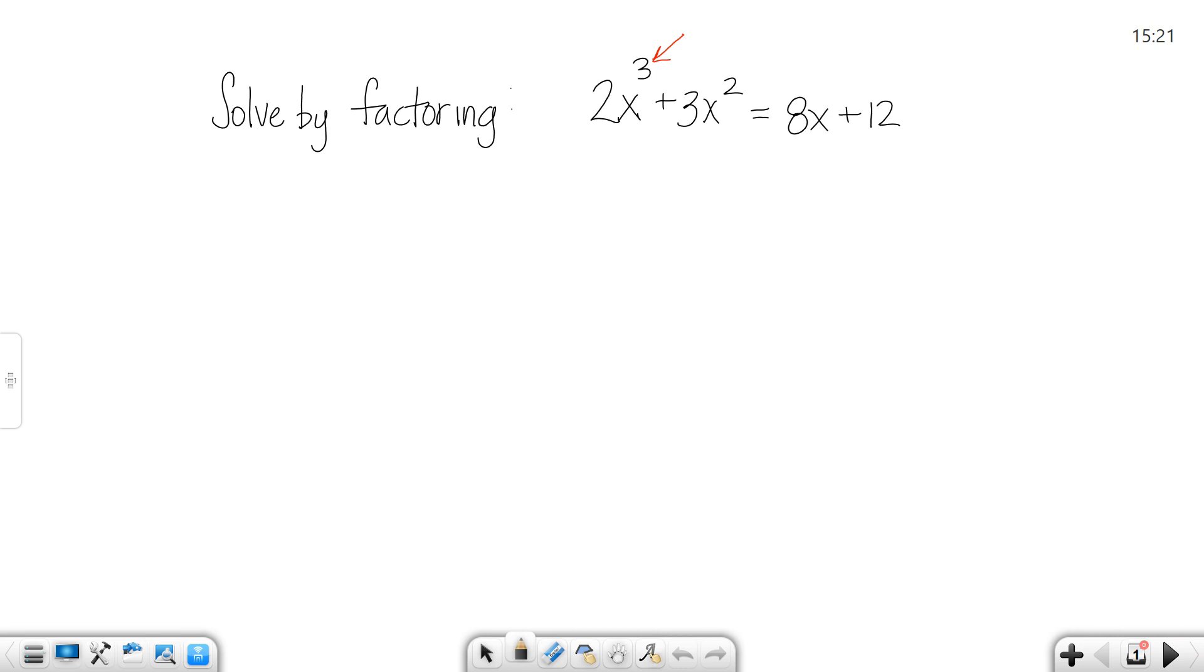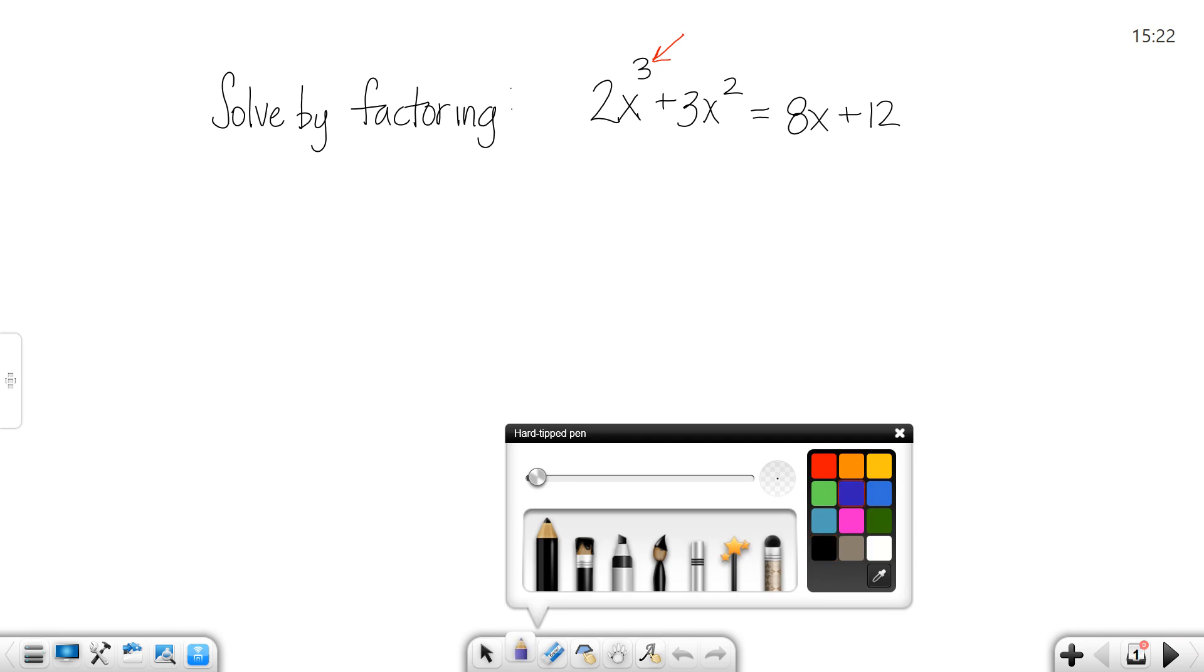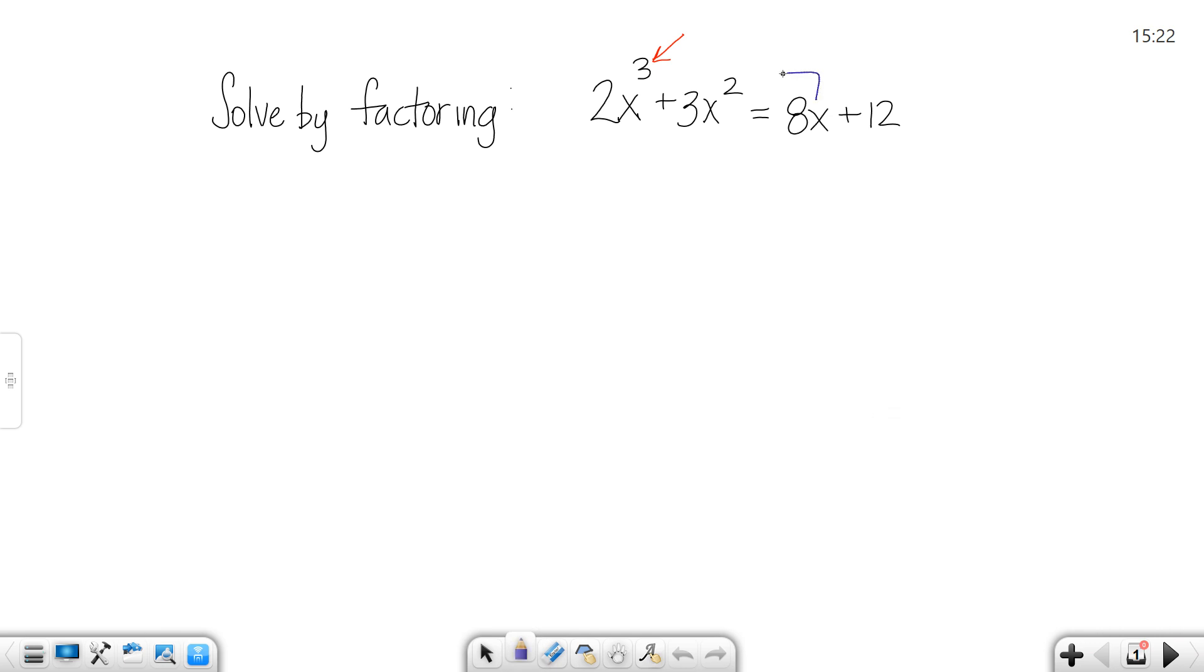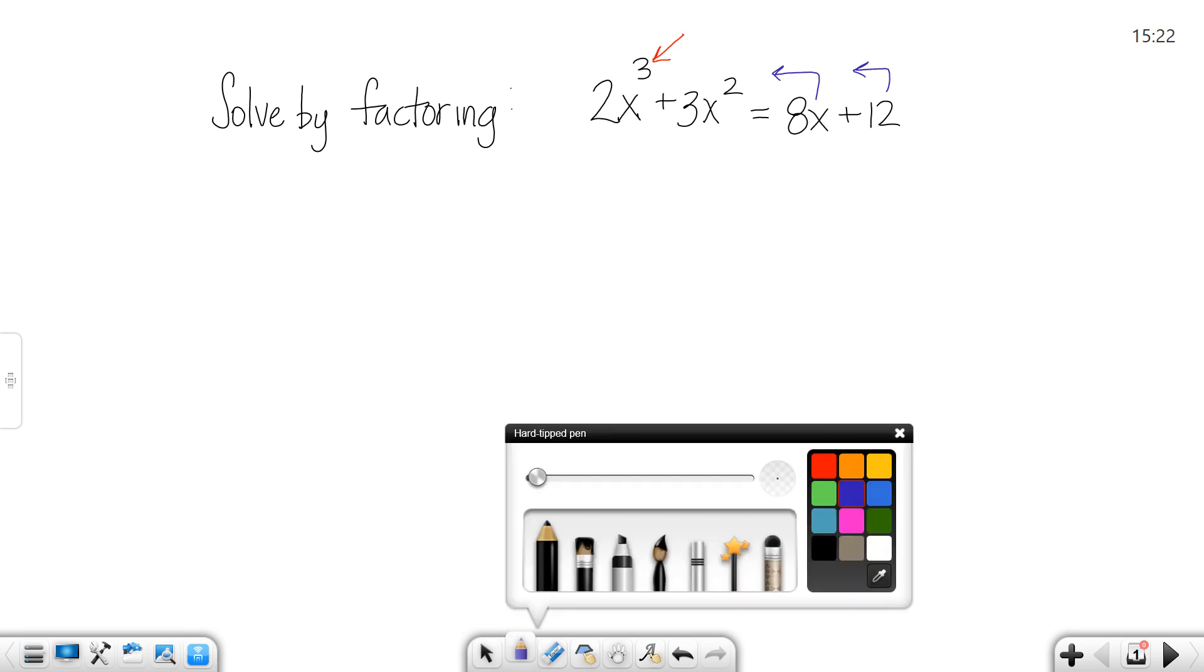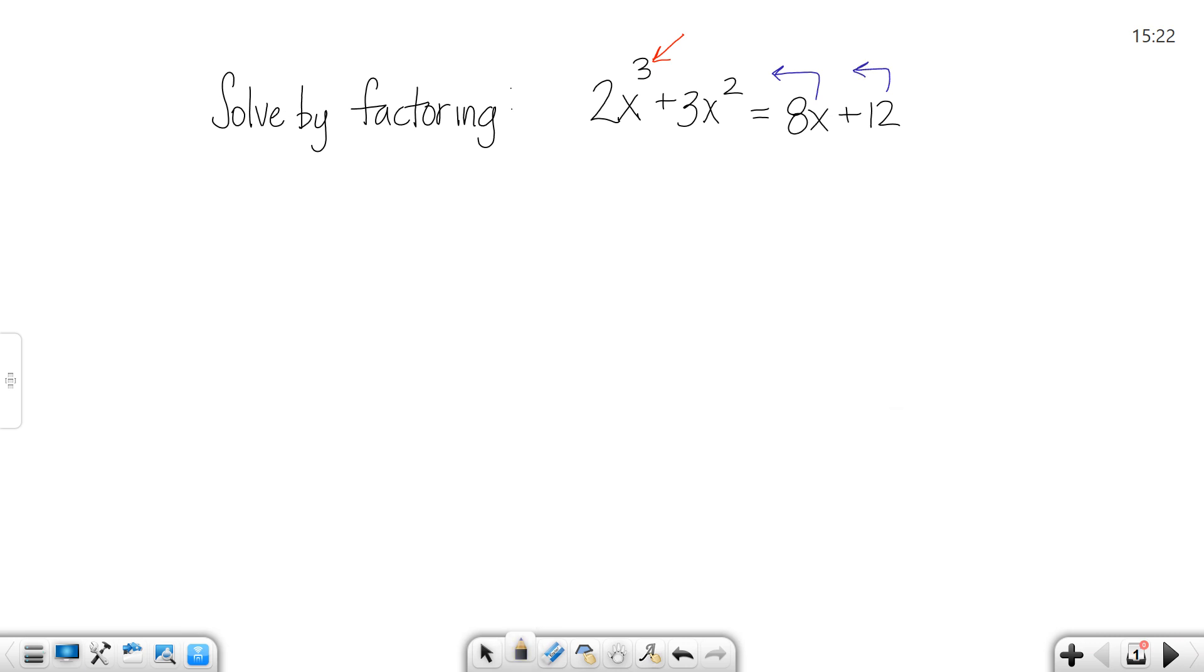Our same solve by factoring rules apply that we had in our quadratic section. The first thing we want to do is get everything to one side. So I'm going to move this 8x over, and I'm going to move this 12 over. That way, everything comes to one side.